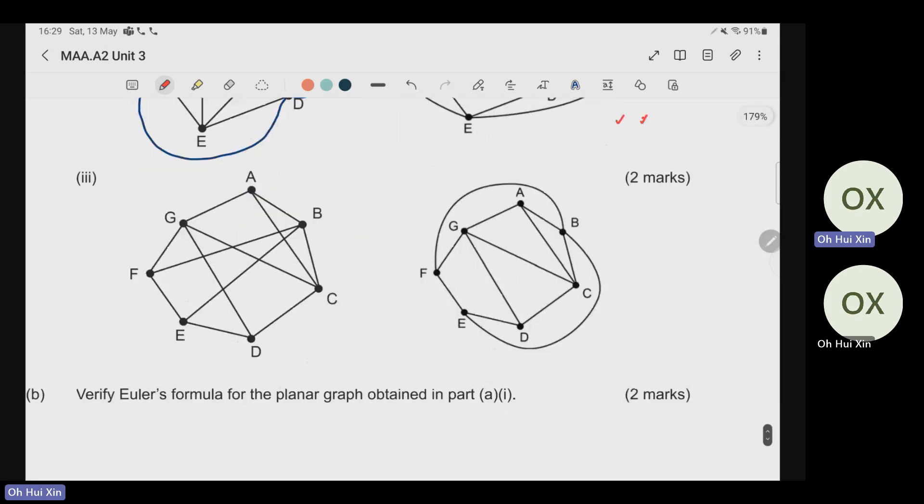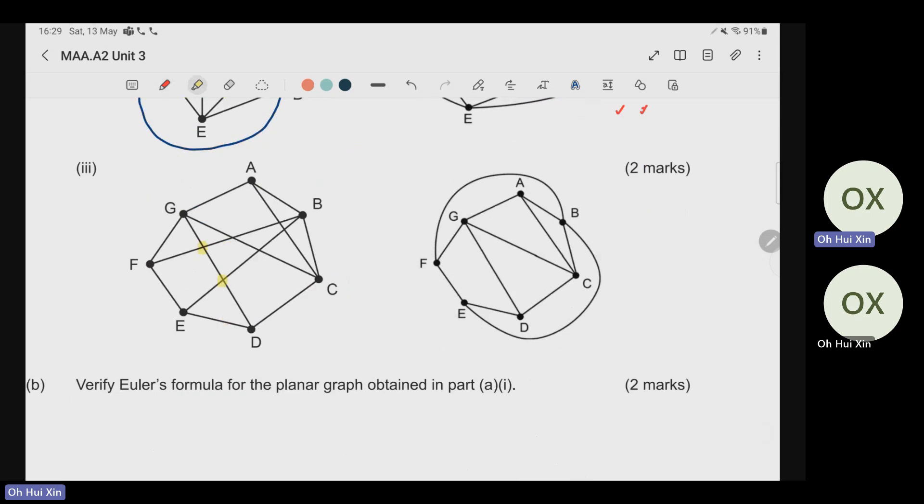Question three, same thing. You can see that these are all the different locations that are crossed over each other. You can see that if you choose to move B, E, and also F, B outside, which is what I did here for the answer, as long as you move these two edges out, then you will be able to solve all the crossing over.